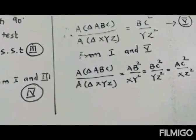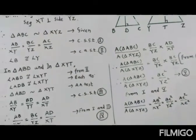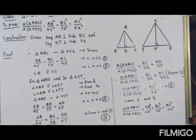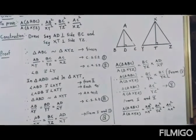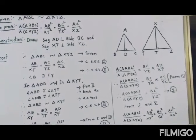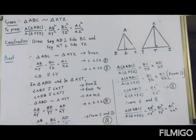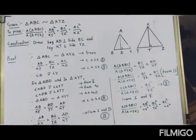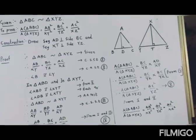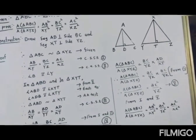Hence we have proved that the ratio of the areas of two similar triangles is equal to the ratio of the squares of their corresponding sides. In the next session we will start with Exercise 1.1. Till then, please take care of yourself and your family.